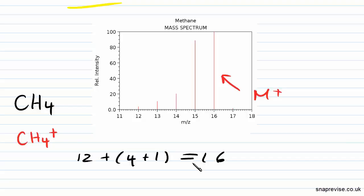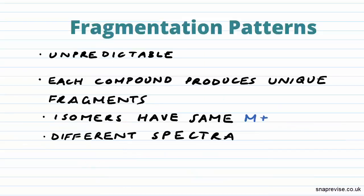So our molecules can produce these molecular ions, but they can actually go on to be broken up into further positive fragment ions and other neutral species. So let's have a look at the fragmentation pattern now.